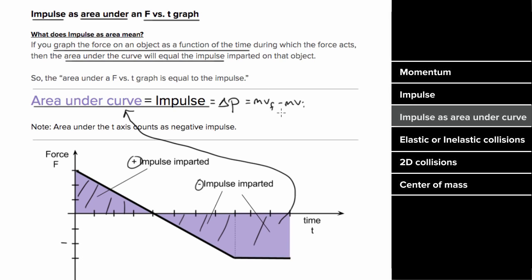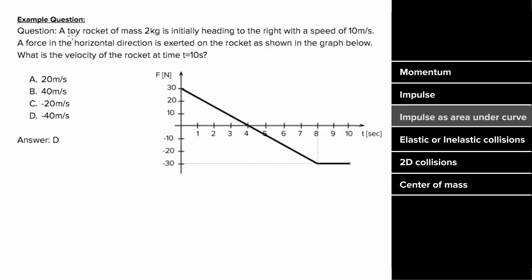So what's an example problem involving impulse as the area under a graph look like? Let's say a toy rocket of mass two kilograms was initially heading to the right with a speed of 10 meters per second, and a force in the horizontal direction is exerted on the rocket as shown in this graph, and we want to know what's the velocity of the rocket at the time t equals 10 seconds.